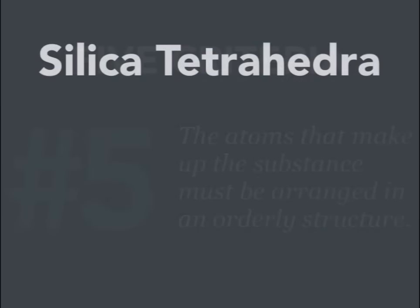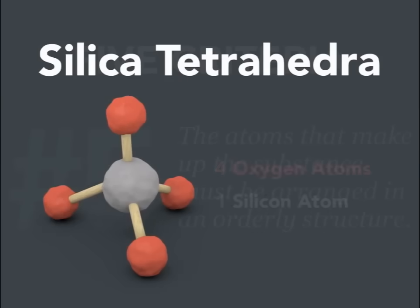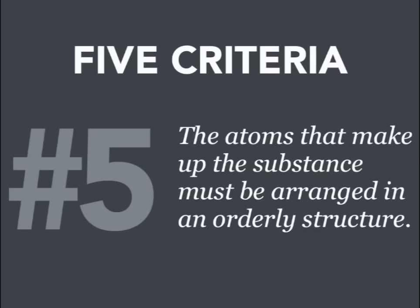The majority of the minerals that exist on earth's surface are considered silicates, meaning they're made up, in part, of silicon and oxygen. The silica tetrahedra is the most common arrangement of silicon and oxygen atoms within a mineral. It looks something like this model here, where the red balls of clay represent oxygen atoms, and the gray is a silicon atom. They're bound together in this tetrahedra shape, and this becomes the most common building block of minerals on earth. So that's what we mean when we say the atoms must be made up of a specific orderly structure.